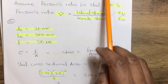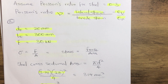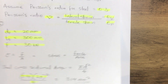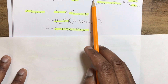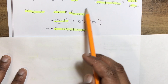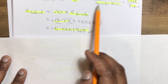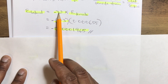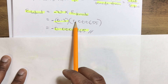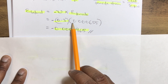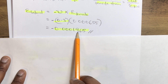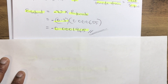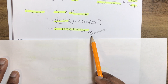Our calculated stress equals 95.54 mega Pascal. Moving to the second question: calculate the lateral strain, given that the tensile strain equals 0.00655. Using Poisson's ratio equals negative lateral strain over tensile strain, we find lateral strain equals negative 0.3 multiplied by 0.00655, which gives us negative 0.001965. This is the calculated lateral strain of our steel rod.